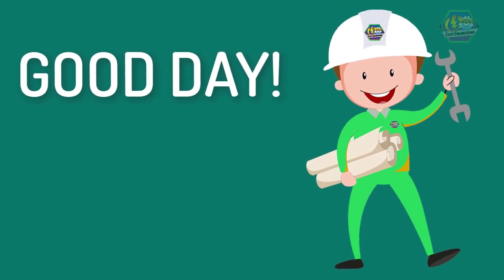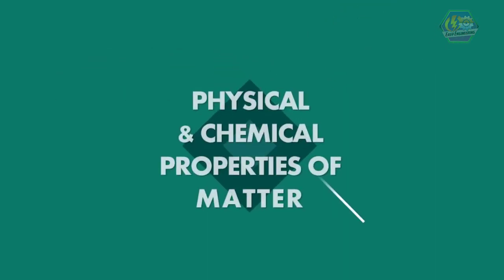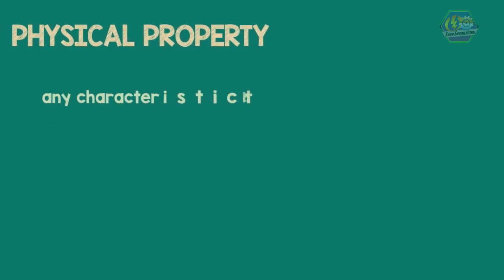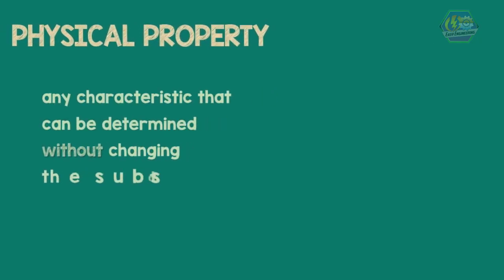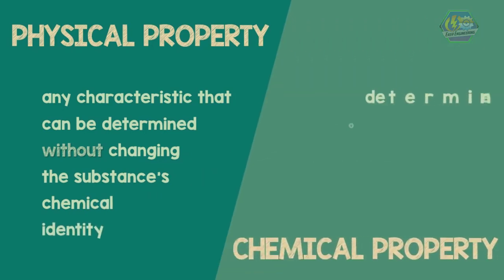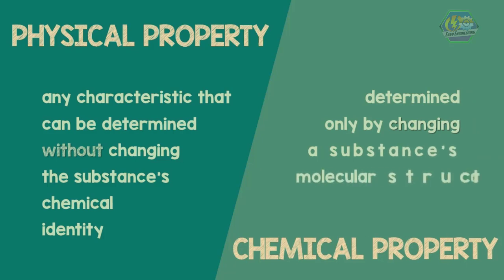Good day, my friends. This is Easy Engineering. This time we're going to talk about physical and chemical properties of matter. Matter has physical and chemical properties. A physical property is any characteristic that can be determined without changing the substance's chemical identity, while a chemical property is determined only by changing a substance's molecular structure.